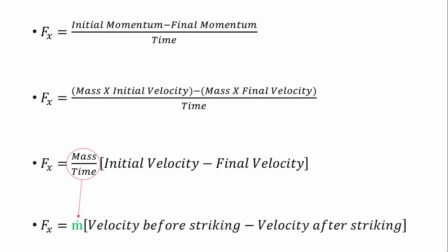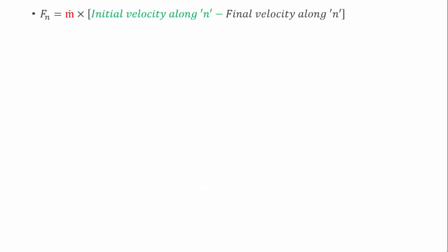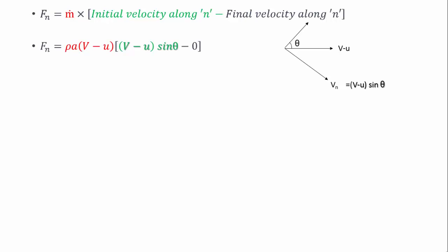Let's start with the force along direction n. The initial velocity of the jet along the x direction is v minus u. We need the initial velocity along direction n. If the plate is inclined at theta degrees, its component along direction n is (v minus u) sine theta. The water is completely deflected by the plate and doesn't flow along direction n after striking the plate, so the final velocity along direction n is zero. From the continuity equation, the mass flow rate is rho times A times (v minus u). Hence, the force acting in direction n is rho times A times (v minus u)² times sine theta.